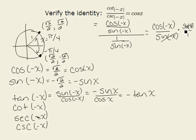We notice that sin(-x) cancels out, leaving us with cos(-x), which equals cos(x).